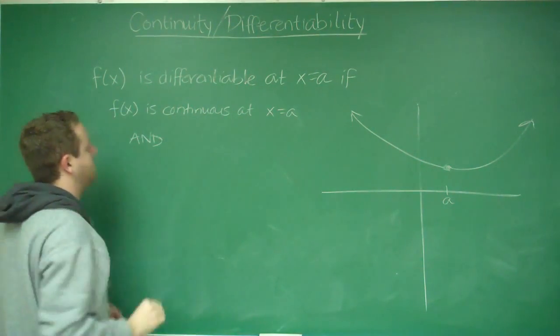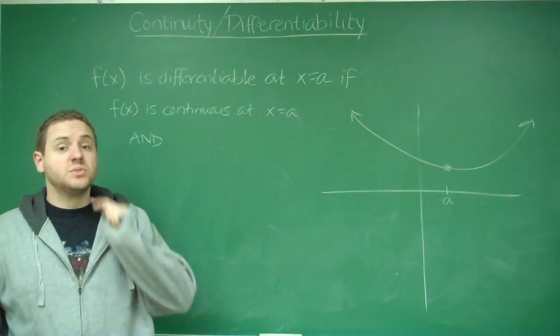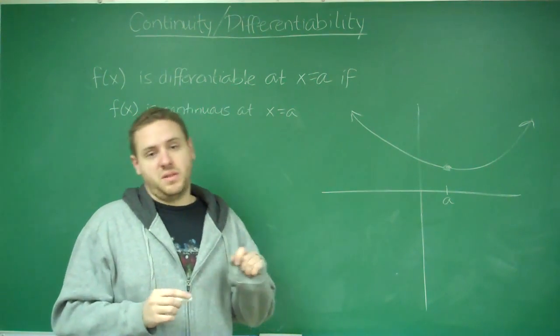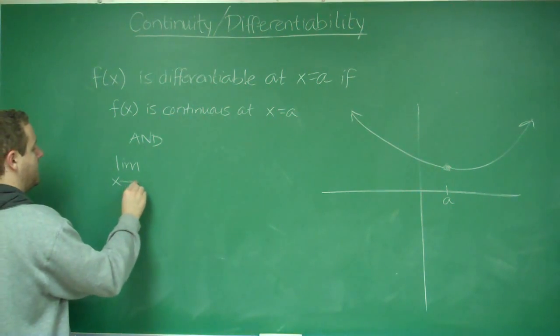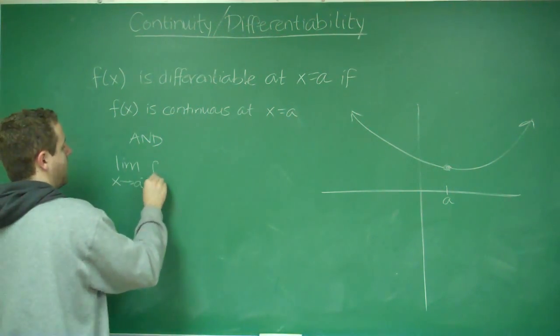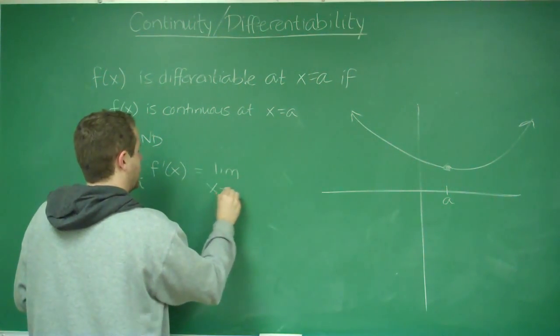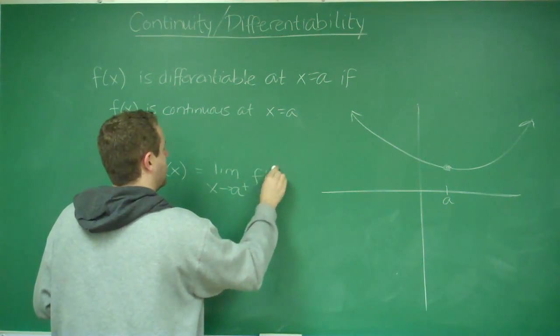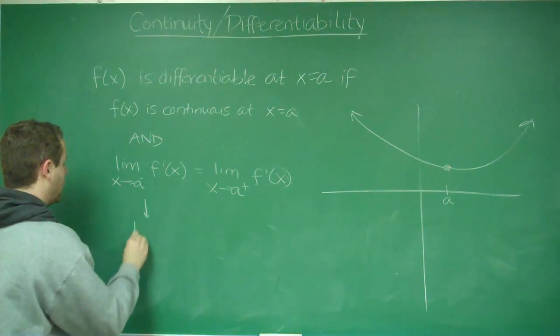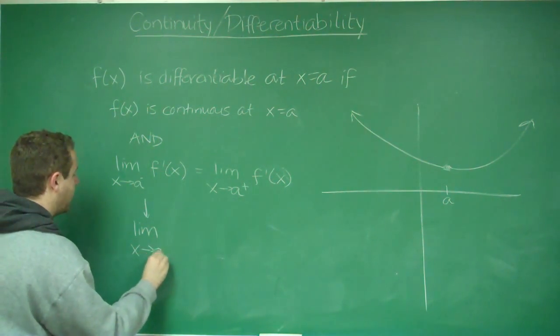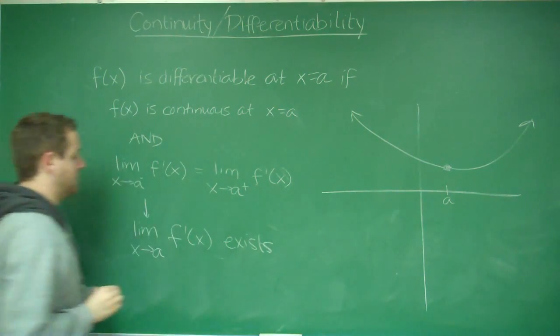And, so now the other condition for differentiability, other than that it has to be continuous, is that the limit of the derivative has to be the same from the left and the right. The derivative has to equal the limit as x approaches a from the right of f prime of x. And this is implying that the limit as x approaches a of f prime of x exists.